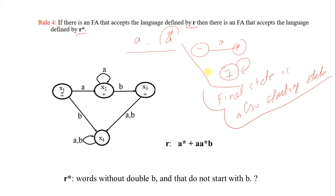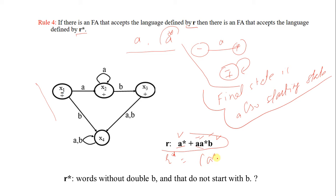First you will draw a table, and then from that table you will draw the FA. For instance, here we have an FA for a regular expression that accepts either null, A's, or A followed by optional A's and B. If you take the Kleene star of this regular expression, it becomes A-star plus A·A-star·B.